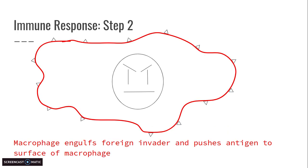In step two, we have what's called the macrophage engulfing the foreign invader. It essentially eats the bacteria, then rips off all the antigens that were on the bad guy — that bacteria — and pushes them out to the surface. Again, you're going to draw this and write the statement underneath.